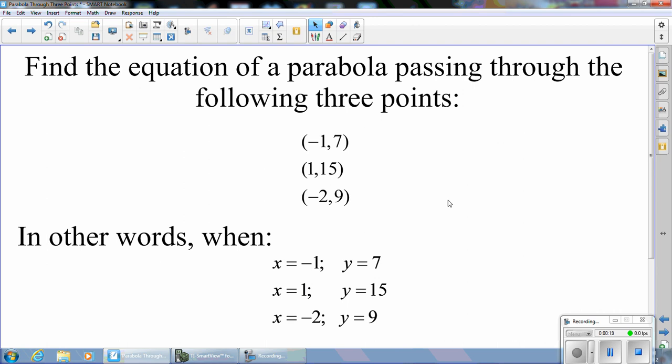That is, we want a parabola such that there are three points on it, where x equals negative 1 and y equals 7, x equals 1 and y equals 15, and x equals negative 2 and y equals 9.